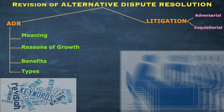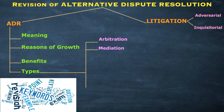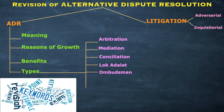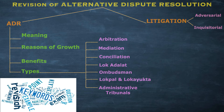The major types of ADR we studied are: first, arbitration; second, mediation; third, conciliation; fourth, Lok Adalat; fifth, Ombudsman; sixth, Lokpal and Lokayukta; and seventh, administrative tribunals. So we have studied seven methods of alternative dispute resolution in Unit 3.